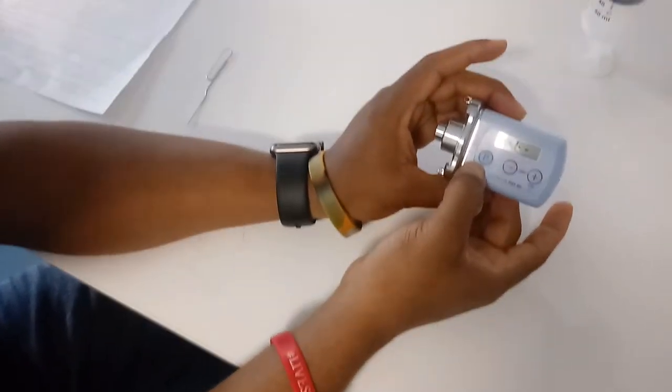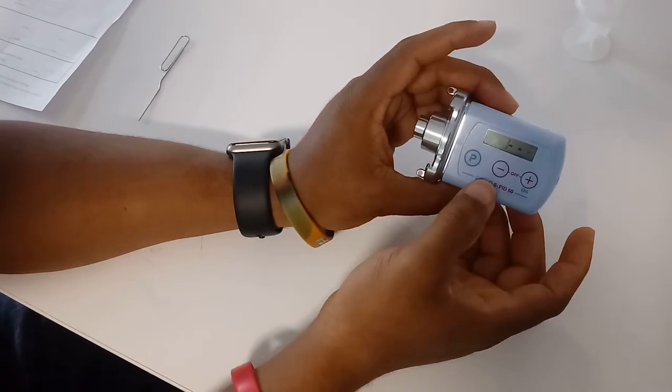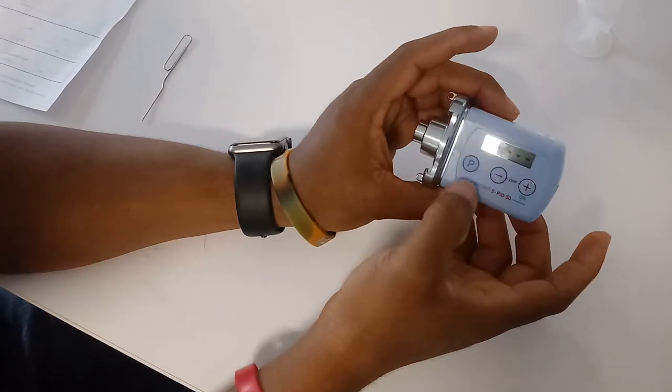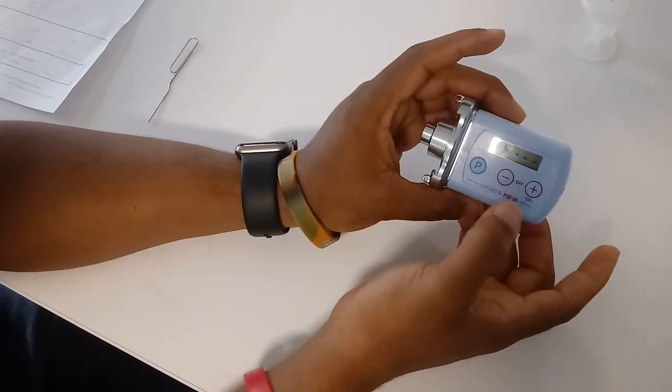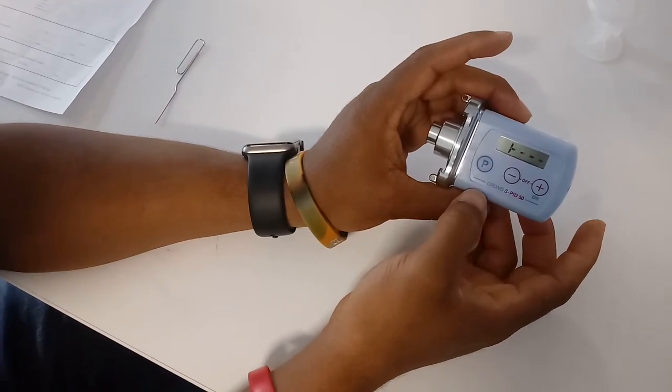So once again, you hold the P button until you hear it beep. It will start to blink. Once it starts to blink, you hit the minus button and that will change it from the flow rate to the time rate. You can do the same thing backwards, from time mode back to flow rate mode. That's how you do it.